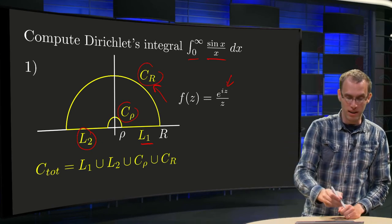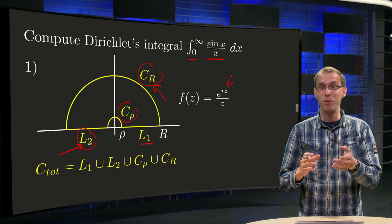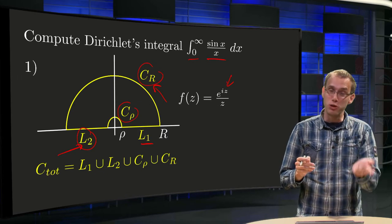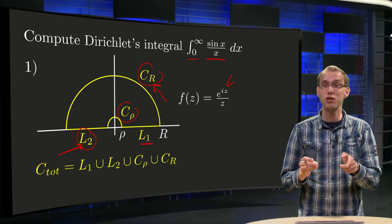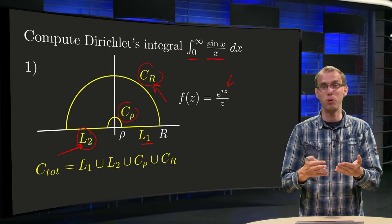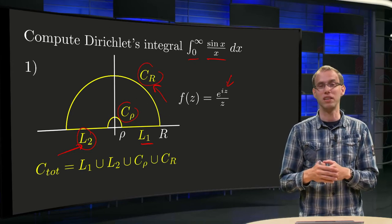But now comes into play the inclusion of L2, because on L1 we will have e to the power ix over x, and later on L2 we will have e to the power minus ix over x. And together they are going to give us e to the power ix minus e to the power minus ix equals the sine of x.